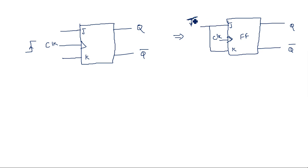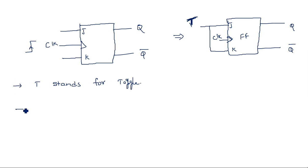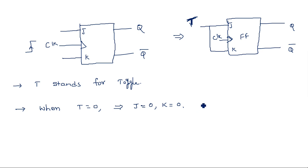This T flip-flop is nothing but a toggling flip-flop — T stands for toggle. When T is equal to 0, it internally sends 0 to both J and K. From the truth table of the JK flip-flop, when both J and K are 0, the output Q is nothing but the previous state.